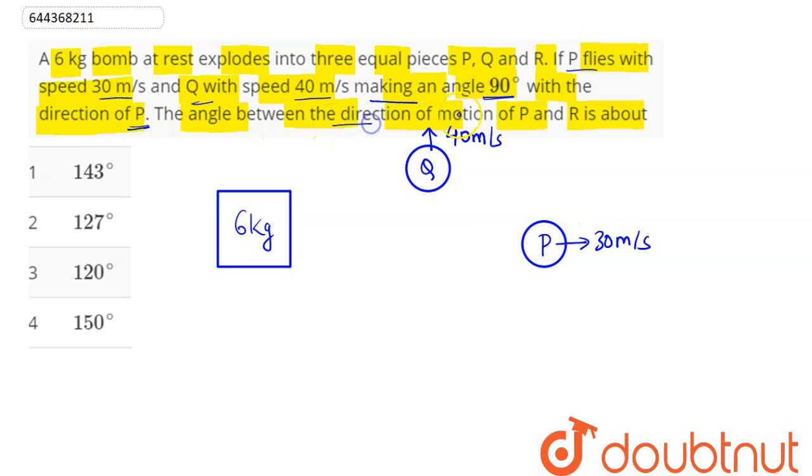Then the angle between direction of motion of P and R is what we need to find. If this particle Q is flying in plus y direction, P particle is flying in plus x direction.